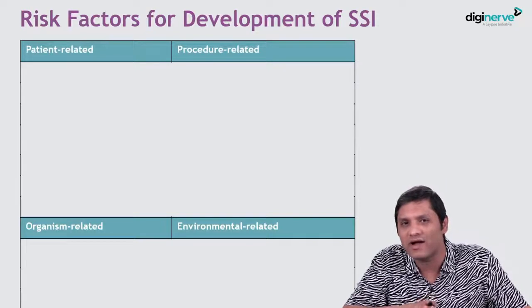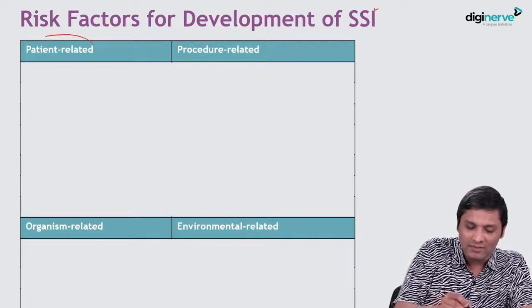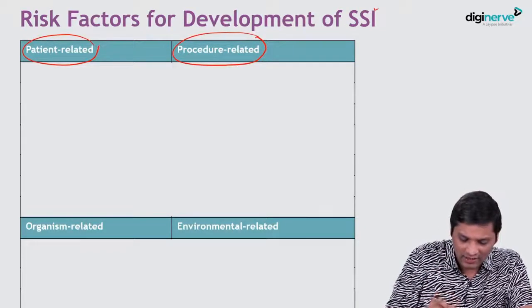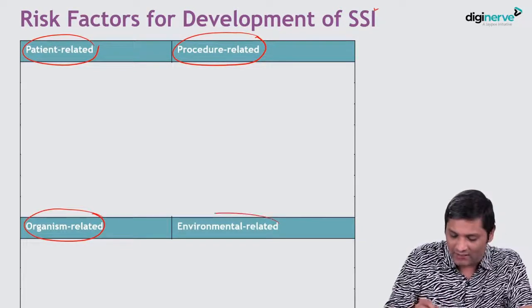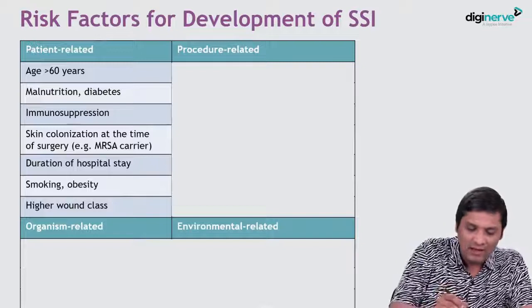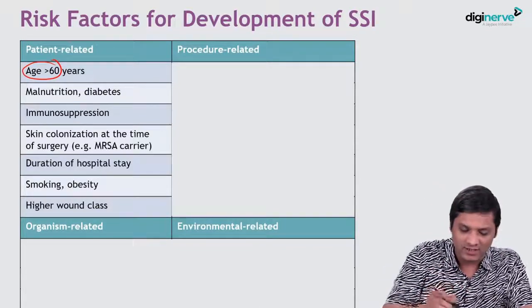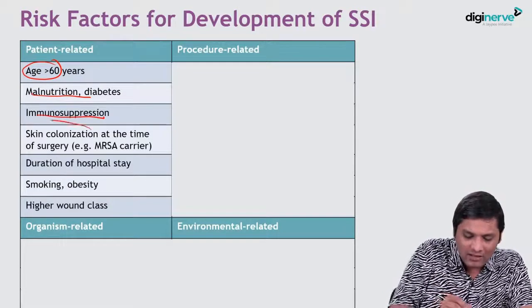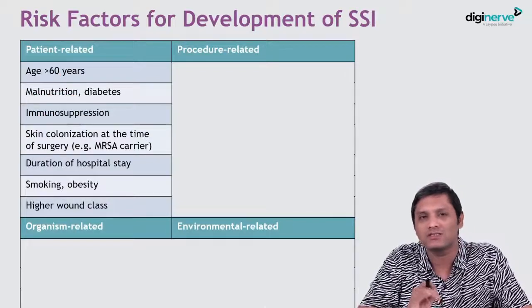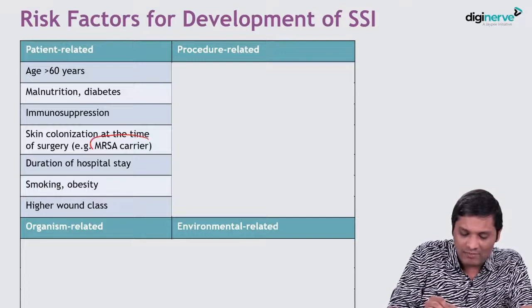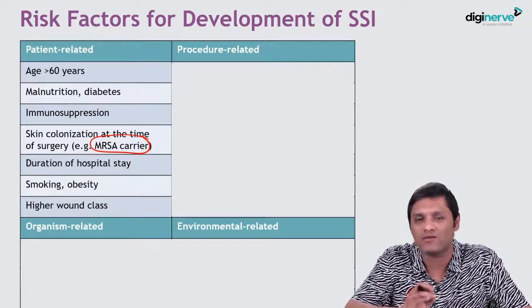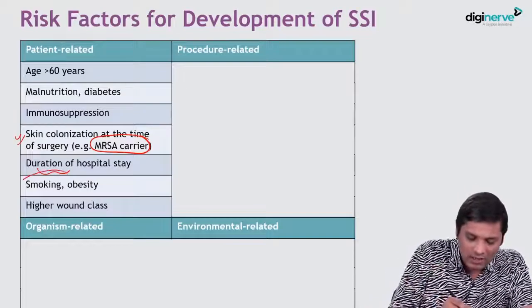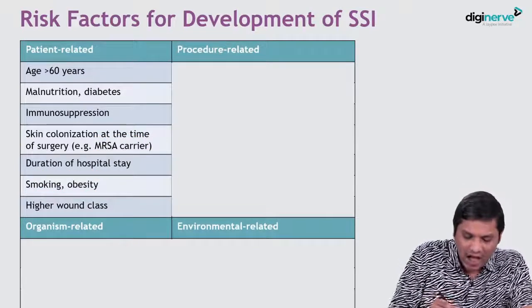The risk factors for SSI may be patient-related, procedure or surgery related, organism related, and environmental. Patient-related risk factors include extremes of age, malnutrition, immunocompromise, and skin colonization. For example, patients who are MRSA carriers have a higher risk of developing MRSA SSI in areas where MRSA is colonizing. Other patient-related factors include longer duration of hospital stay, smoking, obesity, and higher wound class.